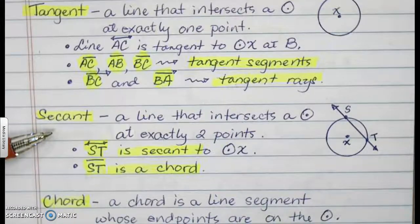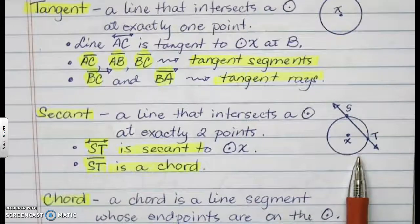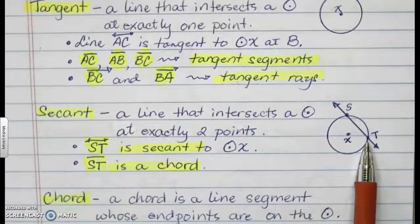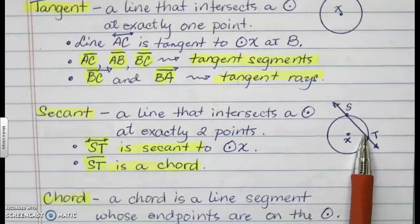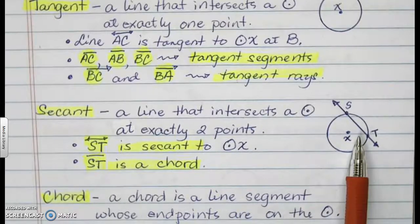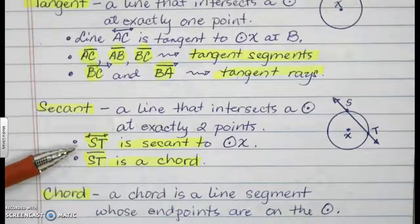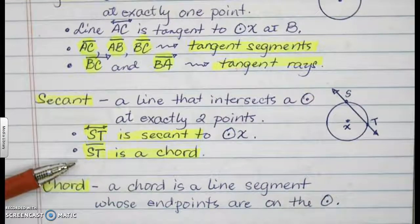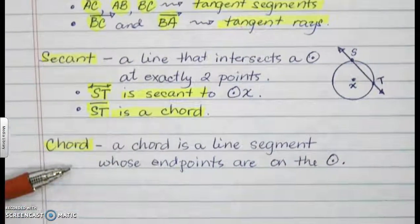A secant is a line that intersects a circle at exactly two points. In this illustration, line ST intersects circle X at two different points, S and T. The line also contains some interior points of the circle — when that happens, the line is a secant. So ST is secant to circle X, and line segment ST is a chord. A chord is a line segment whose endpoints are on the circle.